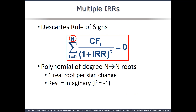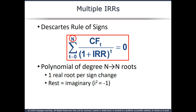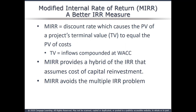In solving for internal rate of return, we're solving for the root of an n-degree polynomial. Descartes' rule of signs says there will be one real root for each sign change, with the remaining roots imaginary. For a project with non-normal cash flows, for each sign change you can get a real solution to internal rate of return. A solution to both the reinvestment assumption and the multiple IRR issue is to use the modified internal rate of return.